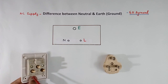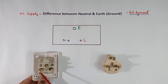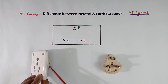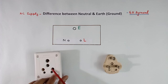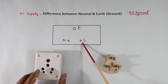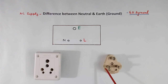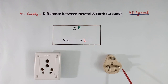In the socket, L is written — that is the line terminal. Here neutral is written. Similarly in this plug, L is written and here neutral is written.